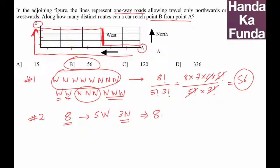So all I need to do is from eight I need to select three, which is 8C3, or 8 factorial by 5 factorial 3 factorial, which is once again 56. That means my answer will be option B.